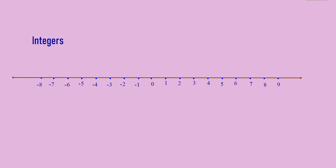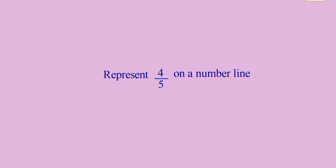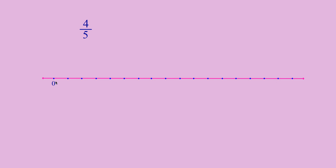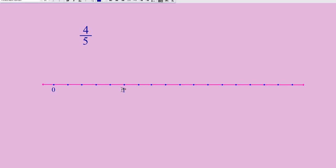Now let us see how we can represent a rational number on a number line. 4 by 5 means we have to divide a unit into 5 equal parts. Draw a number line and mark 0 first. 4 by 5 will be on the right side of 0 as it is a positive rational number. Now take 5 equal divisions — 1, 2, 3, 4, 5 — and mark it as 1. One unit contains 5 equal divisions.